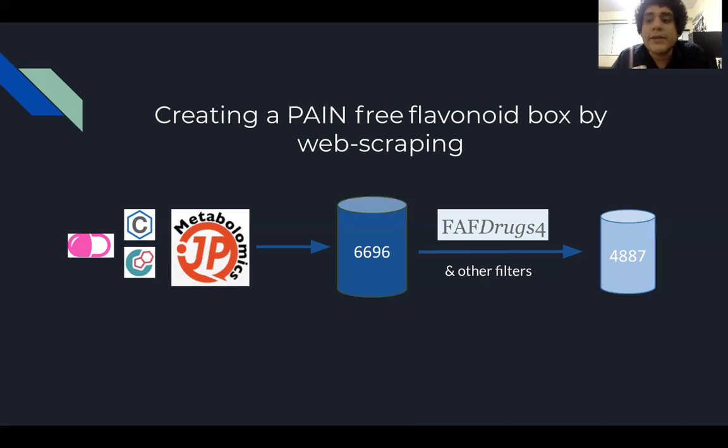So the problem with this database is that it is a wiki. So it is designed for just one click, one search, it is not designed for a bulk download of all the components that it has. So we needed to apply some kind of protocol to extract all the information. But after applying these protocols of data mining, we uploaded our flavonoid database to the FAF-drugs server, which has an algorithm for recognizing these moieties that are common to PAINs. And after recognizing the molecules that could be PAINs, we filtered them and ended up with a database of 4887 compounds.